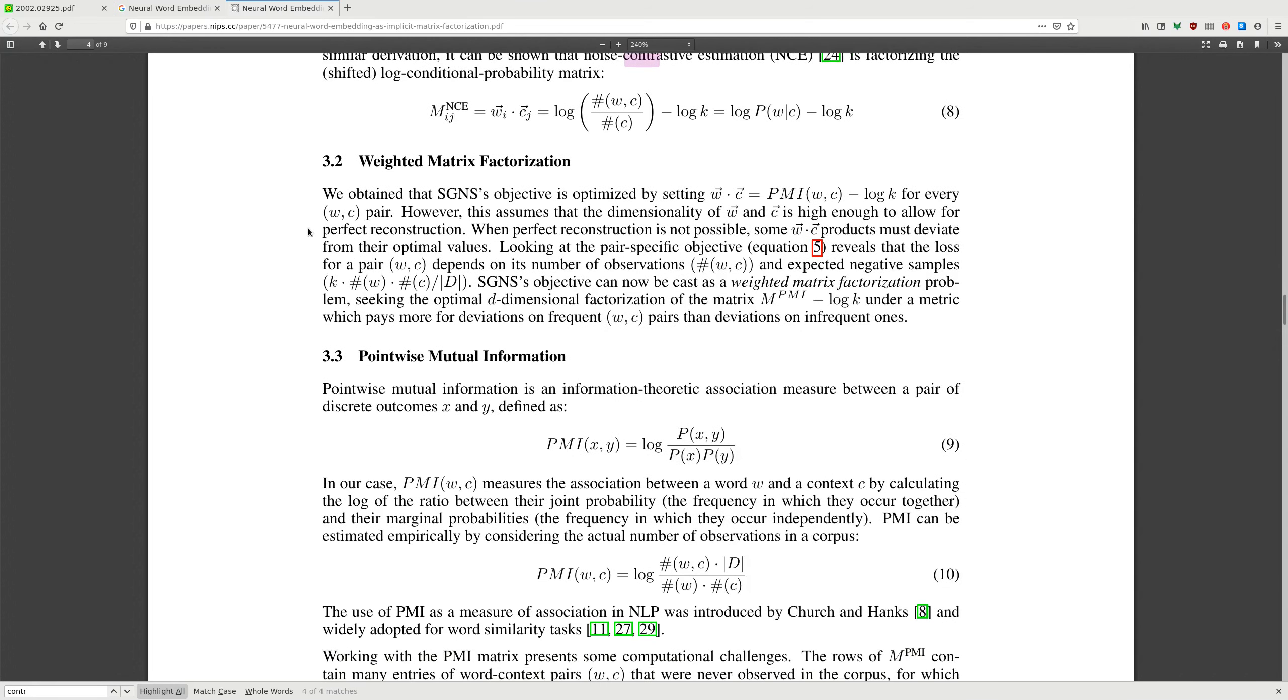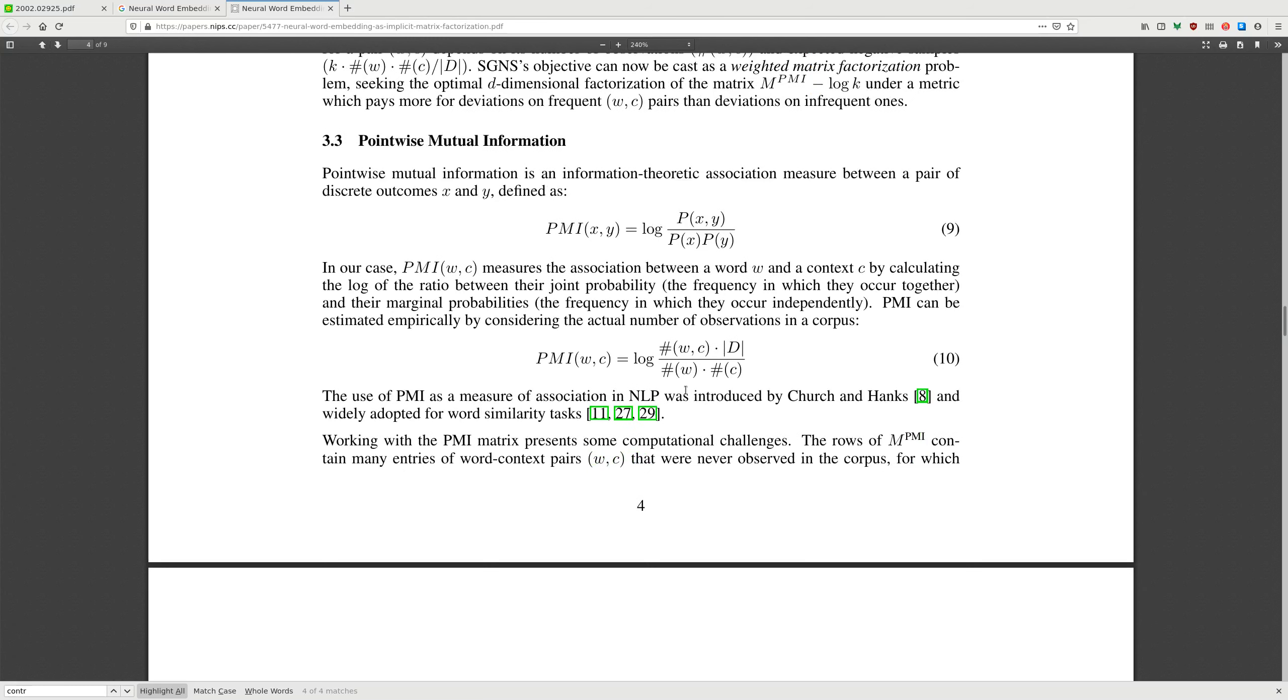Weighted matrix factorization. We obtained that SGNS objective is optimized by setting word vector and context vector to PMI minus log k for every pair. However, it assumes that the dimensionality is high enough to allow for perfect reconstruction. When perfect reconstruction is not possible, products must deviate from their optimal values. Looking at the pair objective equation reveals that the loss of a pair depends on the number of observations and expected negative samples. The objective can be cast as a weighted matrix factorization problem seeking optimal d-dimensional factorization of PMI minus log k under a metric which pays more for deviations from frequent pairs than deviations on infrequent ones.